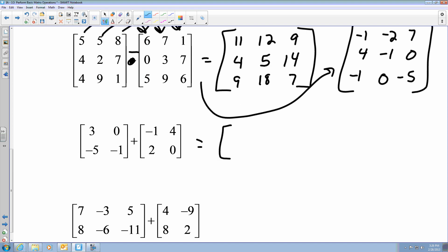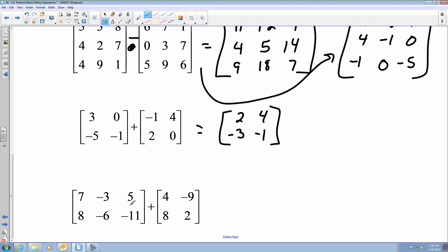So this is an addition one. I am going to say that this becomes 2, 4, negative 3, and negative 1. Looking at this one, this one is a 2 by 3 matrix. This is a 2 by 2. Two different dimensions, which means we can't do it. So our answer is not possible.